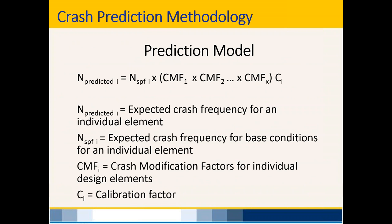Here is the basic formula: predicted crashes for a specific site (labeled N sub i) starts with crashes predicted from an SPF (N sub SPF). If the roadway differs from base conditions — which it most likely will — you need to use crash modification factors: CMF1 times CMF2 times CMF-n to account for all the differences. The last element, C sub i, is the calibration factor.